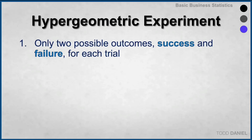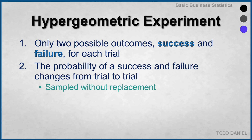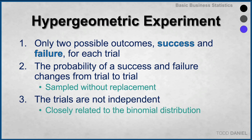In a hypergeometric experiment, there are only two possible outcomes — success or failure — for each trial. But the probability of success and failure changes from trial to trial, most commonly because the hypergeometric experiment is conducted using sampling without replacement. Therefore, the trials are not independent. This hypergeometric experiment is closely related to the binomial distribution that we learned earlier.